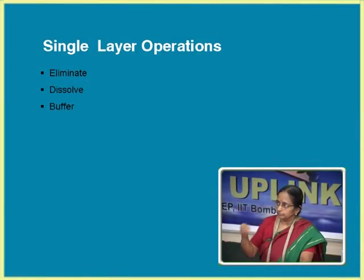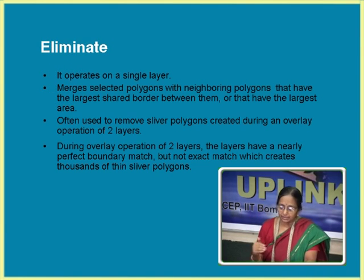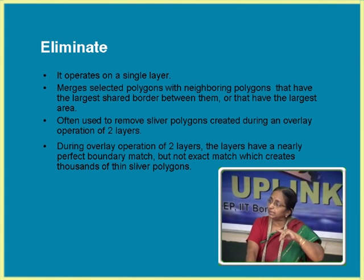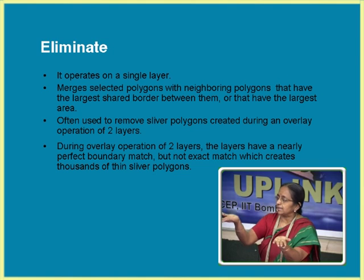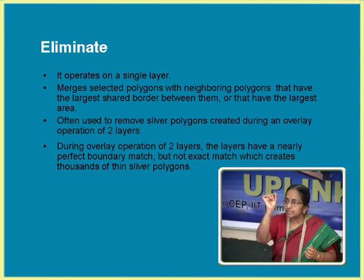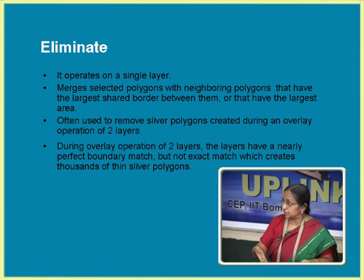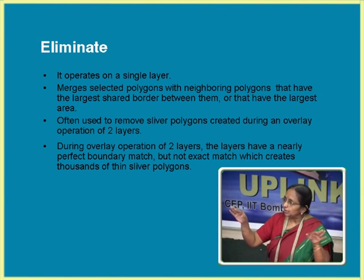Coming to single-layer operations — we saw buffering, proximity, and distance. The functions available in the vector domain have been developed based on what happens in a two-layer operation. Whenever you take a two-layer operation, you may have n number of polygons result. There may be small polygons which may not contribute anything — it may be due to poor digitization. So they have given commands which help you merge nearby polygons and dissolve the boundary.